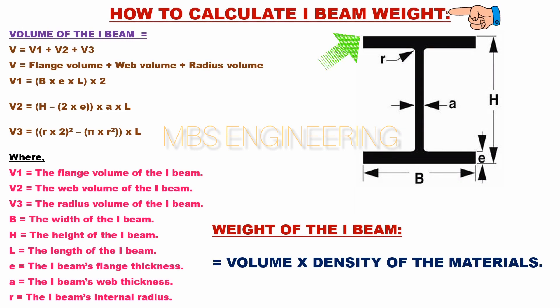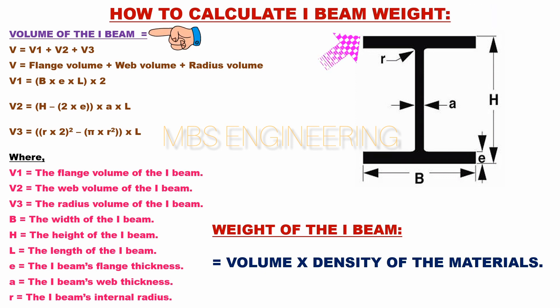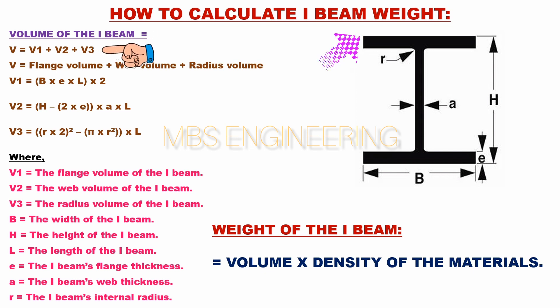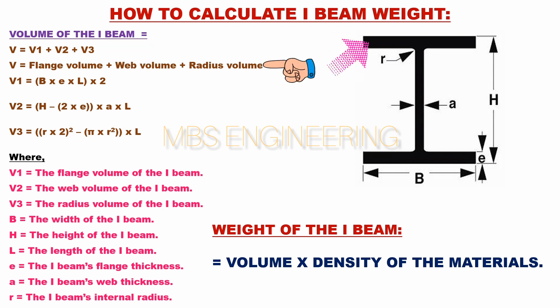We learn about how to calculate the volume and weight of the I-beam materials. The volume of the I-beam: V equals V1 plus V2 plus V3, which equals flange volume plus web volume plus radius volume.